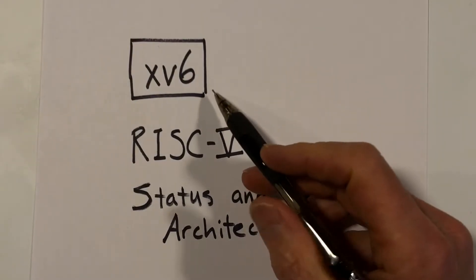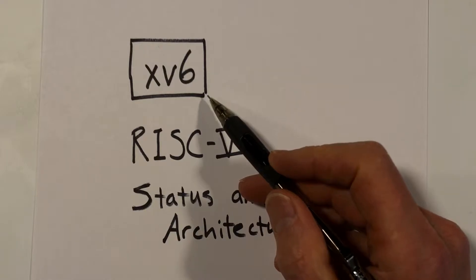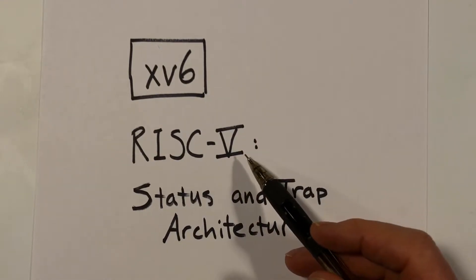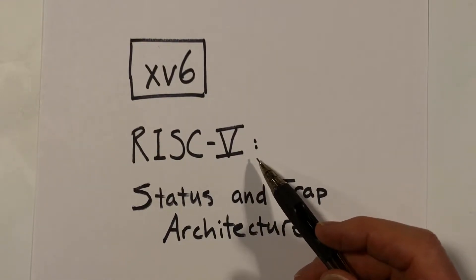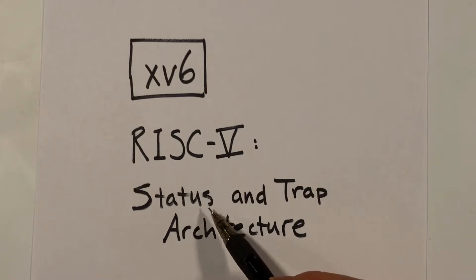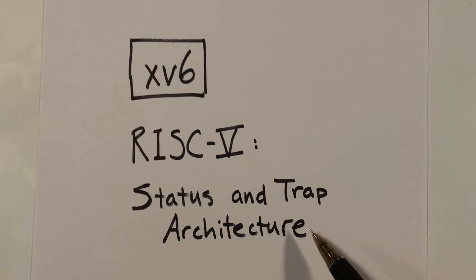This video is part of a series on the XV6 operating system kernel. In this video I'm going to talk about the RISC-V architecture, focusing on the status register and how traps are handled by the hardware.